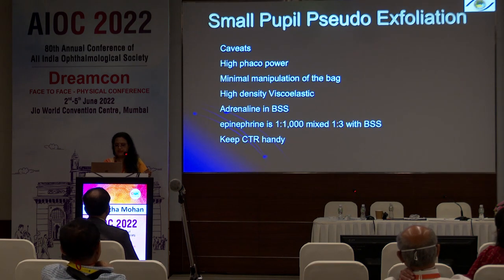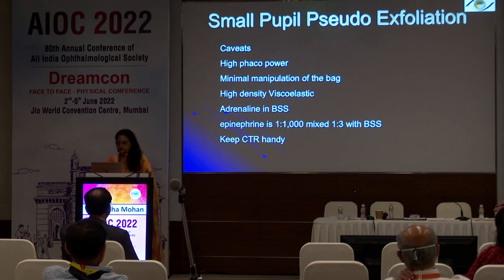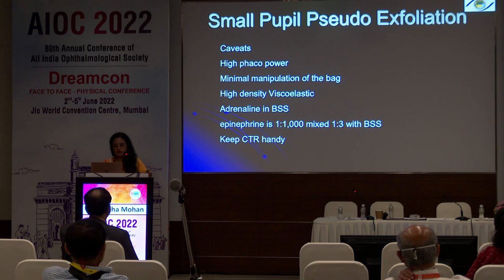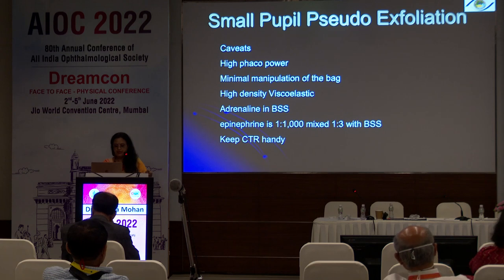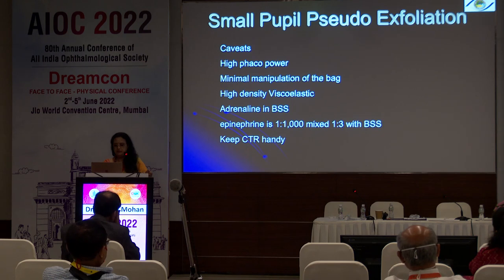The key caveats are: use high FACO power — that is very important. You should not push the nucleus because these patients with pseudo-exfoliation have very poor zonules and are prone for zonular dialysis. Minimize manipulation in the bag and use high-density viscoelastic. My go-to is Viscoat, as Dr. Haripriya also mentioned — I have no financial interest. Viscoat is a combination dispersive-cohesive viscoelastic; it is more dispersive, so it protects the endothelium but also gives quite good space. In patients who are not dilated, you can use an iris hook or adrenaline. Always keep a CTR handy when you encounter these patients.